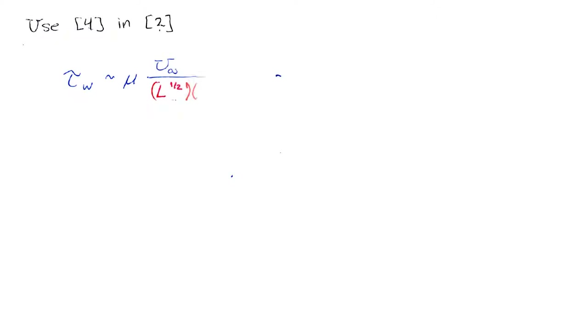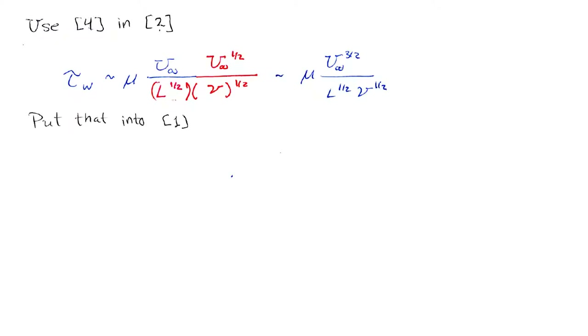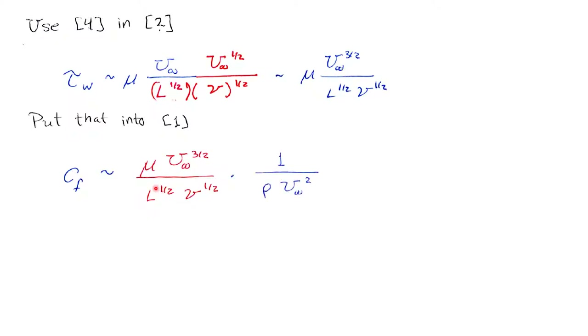Now let's take equation 4 and plug it into equation 2, the squiggle equation for shear stress. Making the substitution: τ_w ~ μ·u∞ / δᵥ, replacing δᵥ with L×(ν/u∞)^(1/2). After a little algebra, I can take that result and put it back into equation 1, the skin friction coefficient. So τ is replaced with all of that, divided by ½ρu∞².